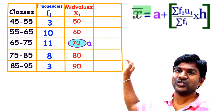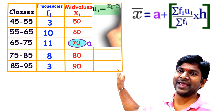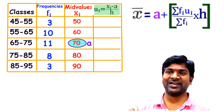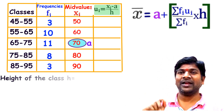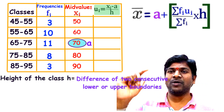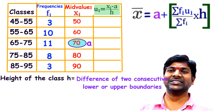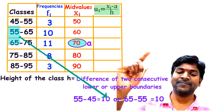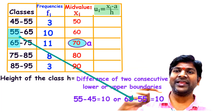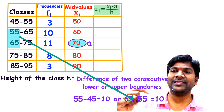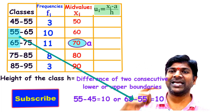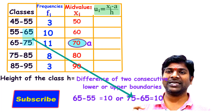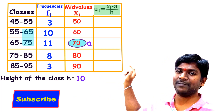In the fourth column we calculate uᵢ = (xᵢ − a) / h. The height h of the classes is the difference between boundaries of consecutive classes: 55 − 45 = 10, 65 − 55 = 10, and so on — so h = 10.